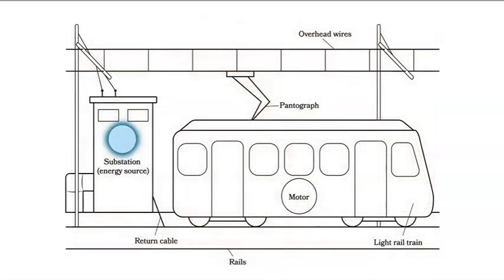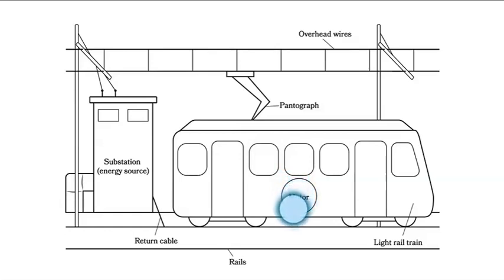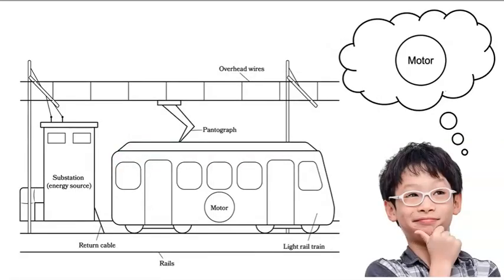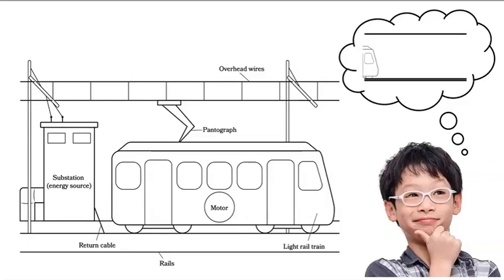Let's return to our diagram and trace the path of electricity from the substation along the overhead wires, through the pantograph, to the motor of the train. We know the circuit is closed because the electricity flows in a complete path that starts and ends at the substation. Electricity even flows through the wheels, the rails, and the return cable. The motor in a light rail train is electric. The gears in the motor have mechanical energy and they make the train move. When the train is moving, it has mechanical energy.